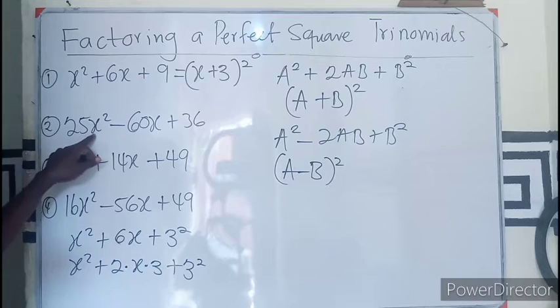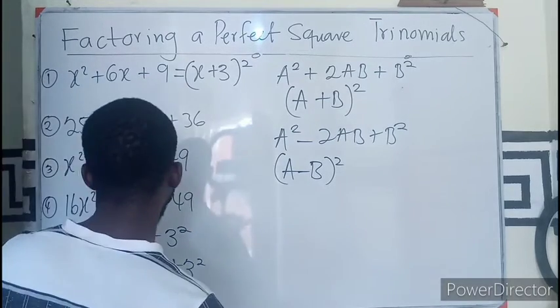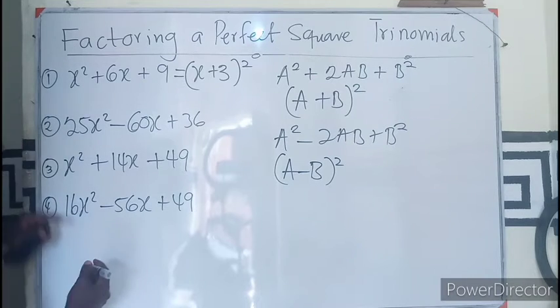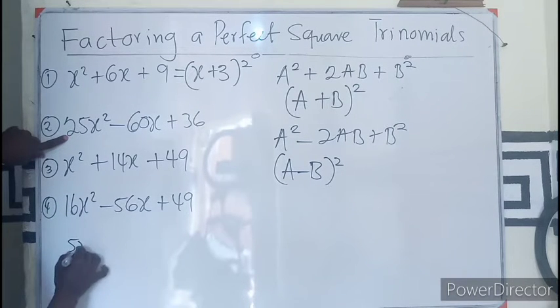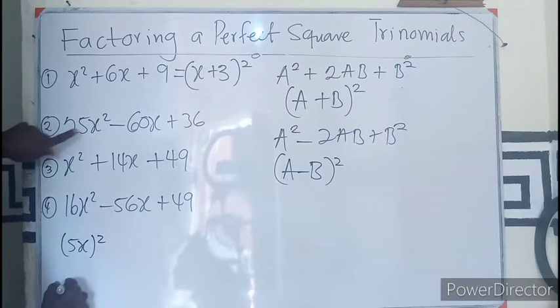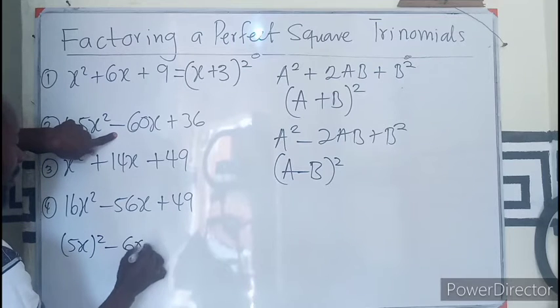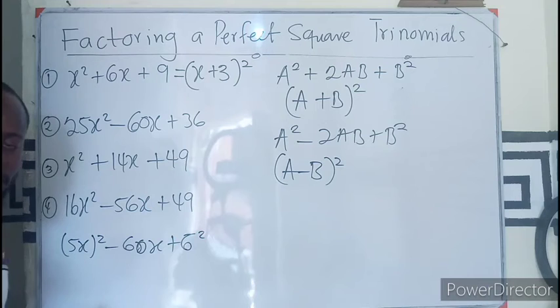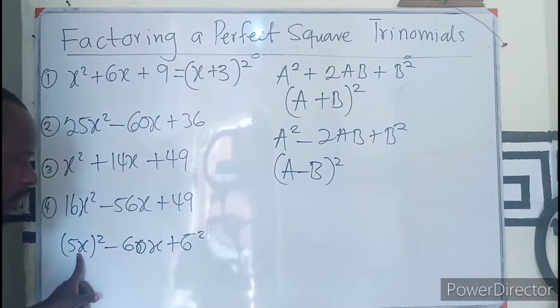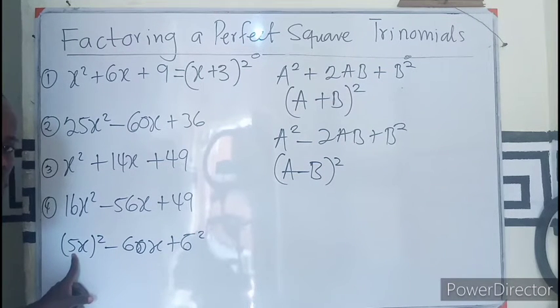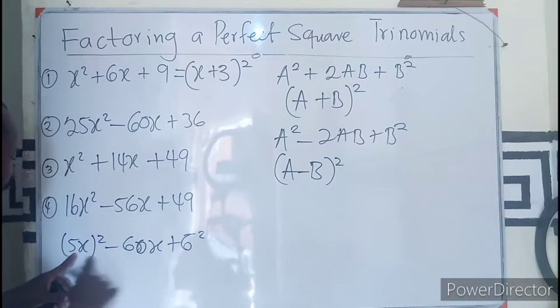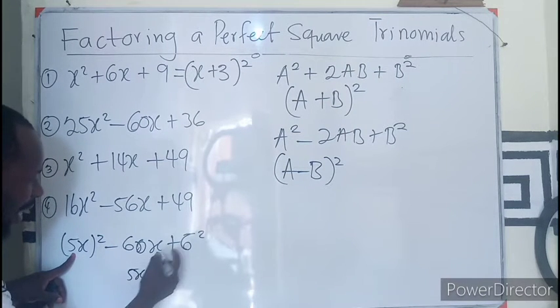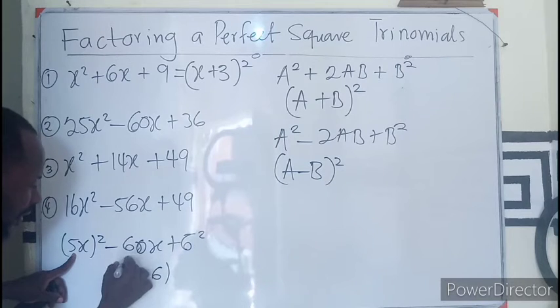All right, so in the second one I can see that I have 25, which is also a perfect square. So this is going to be (5x)² - 60x + 6². So this is the square, this is the square. This whole number is squared.